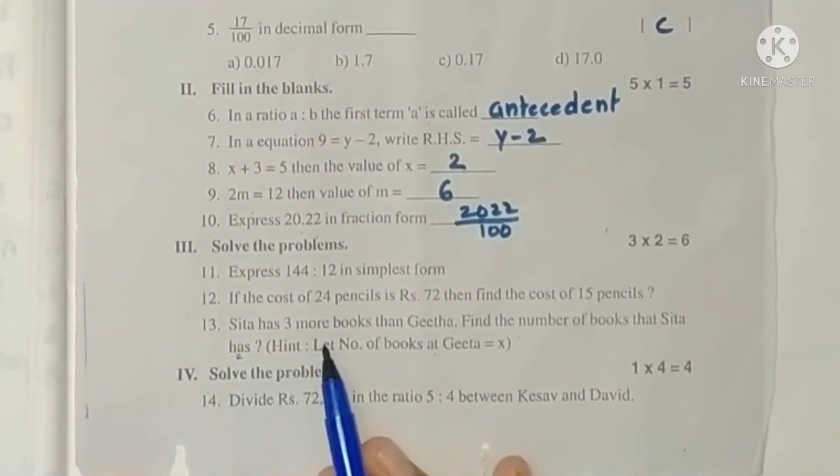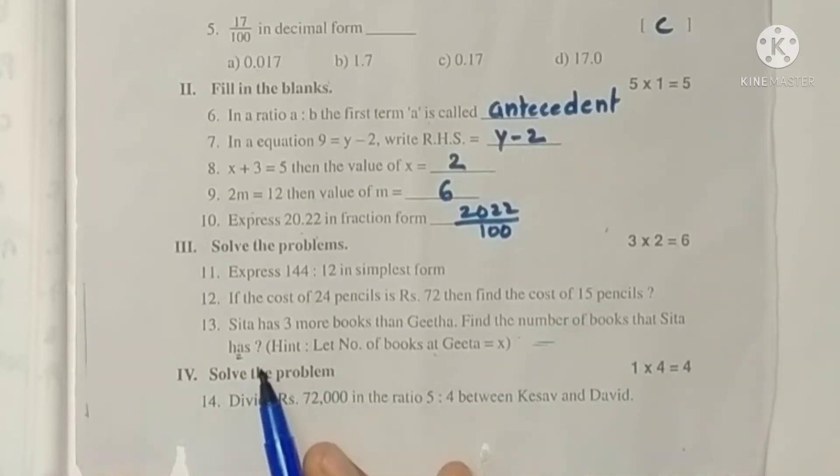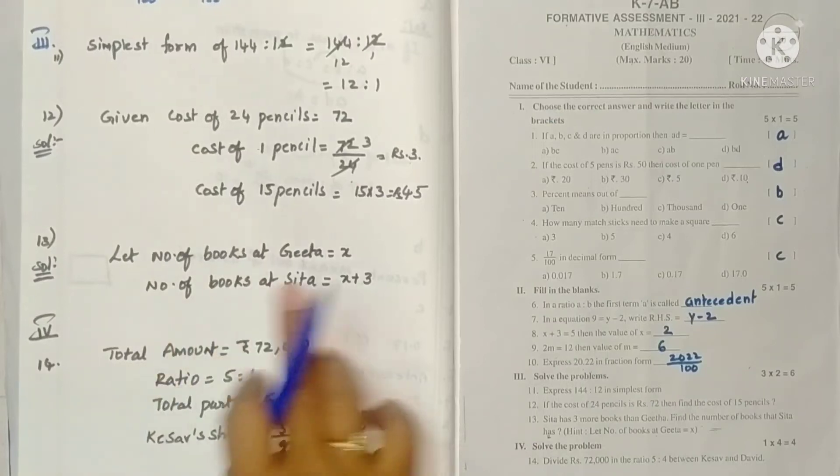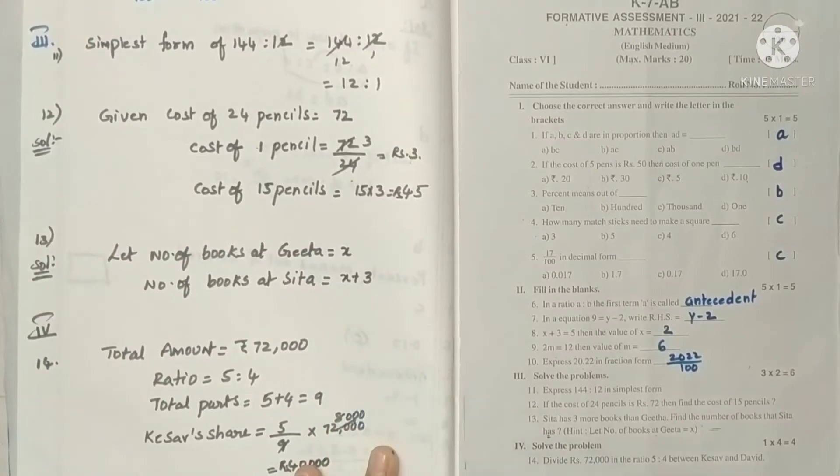Next 13. Sita has three more books than Gita. Find the number of books that Sita has. Let number of books at Gita be x. So Gita has x books. Sita has three more. So simple, x plus three.